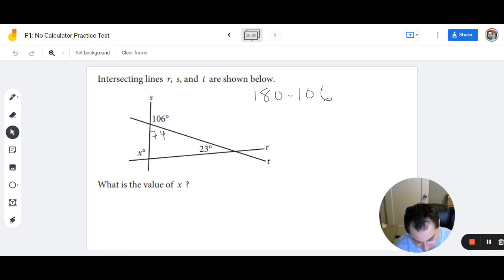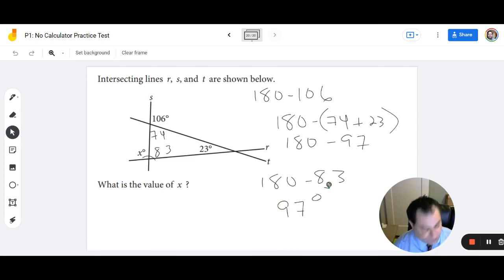So if I take 180 and I subtract 74 plus 23, I can find that angle. Well, 70 plus 20 is 90. 4 plus 3 is 7. So this is 180 minus 97. 180 minus 100 is 80. 80 plus 3 is 83. So we know this is 83. And then lastly, I have another linear pair. So these are going to add to 180. So if I do 180 minus 83. So 180 minus 80 is 100. 100 minus 3 is 97 degrees for x.